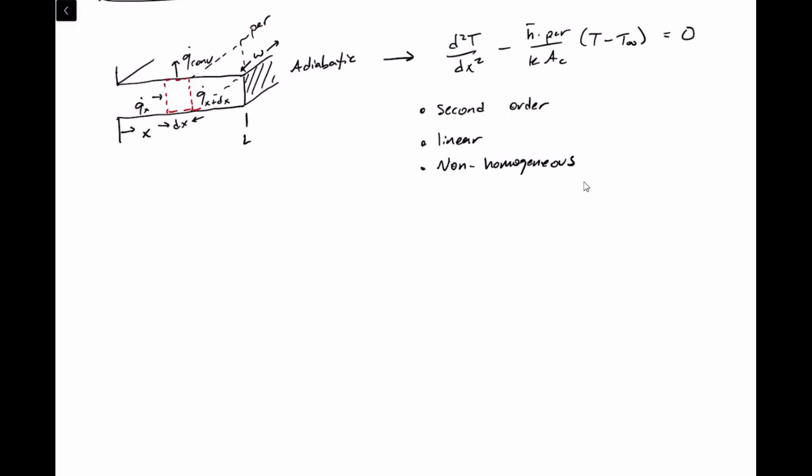This ordinary differential equation falls out of the control volume analysis. We want to point out a couple of things. First, this equation is second order — second order means we're taking the second derivative of temperature. It's also linear, which means the function is dependent on temperature and its derivatives. We don't see temperature squared or temperature times another variable, so it's linear.